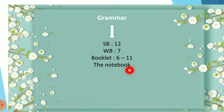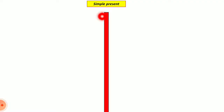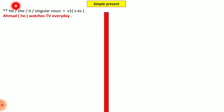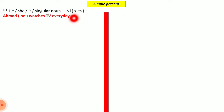Let's start with the simple present. We start with the subject. If the subject is he, she, it, or a singular noun, we use verb one with 's' or 'es' added. For example, when we say 'Ahmed watches television every day' — the verb 'watch' gets 'es' added because the subject is singular.